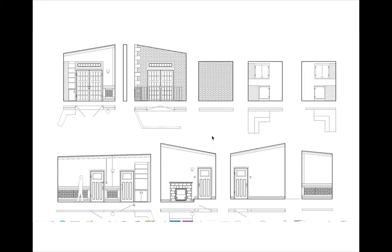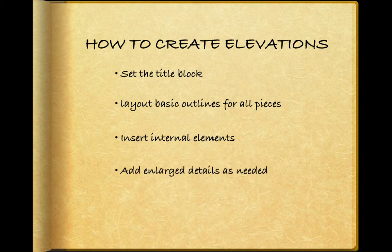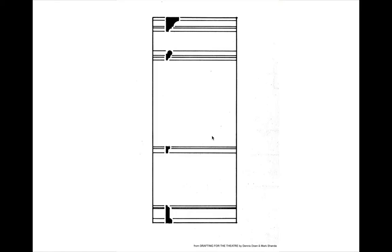Next we'll insert the internal elements — all the full detail to give information. Next we'll add enlarged details as needed. Sometimes an element doesn't stand by itself; it needs more explanation or a larger view to make it easier to understand for the scene shop. Looking at this flat unit, we needed a cross section — or revolved section, as it's called — for the cornices at the top, the picture board molding, the chair rail, and the bottom rail. The typical way of representing those is laying in a solid colored cross section of the molding on top of the actual piece with a halo edge around it so it doesn't blend in.